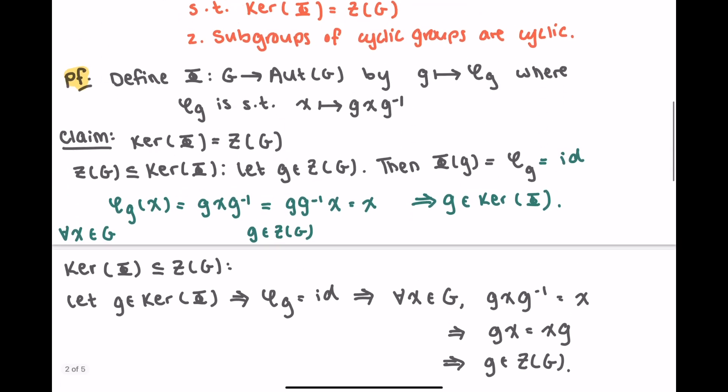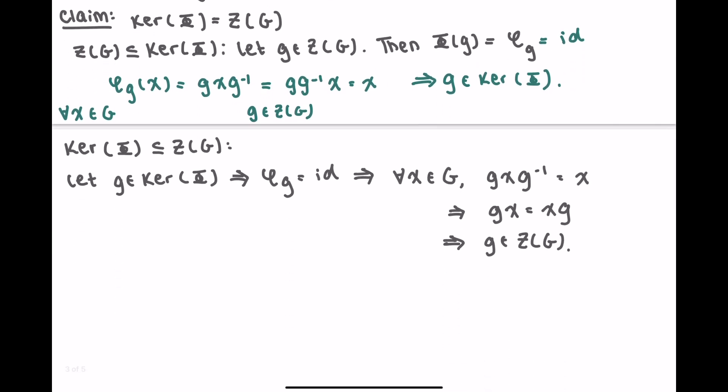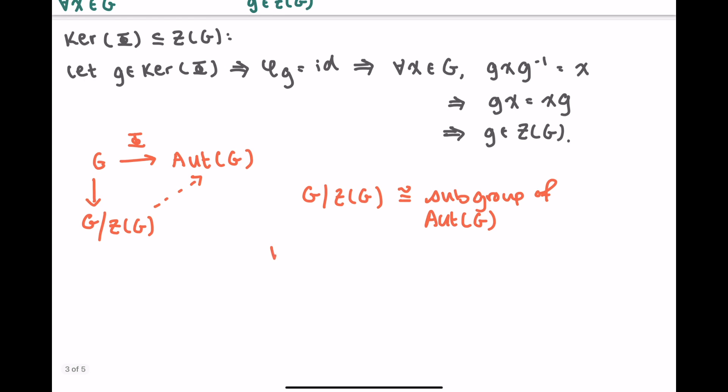We've shown that the kernel is equal to the center. By first isomorphism theorem, I have G going to automorphism group of G by capital phi. I have a map going from G to G mod kernel, which we saw was the center. By first isomorphism theorem, G mod center is isomorphic to a subgroup of the automorphism group. But by our fact, subgroups of cyclic groups are cyclic. We know automorphism group is cyclic, so G mod center is cyclic. By the hint that was provided, this is enough to say that G is abelian.